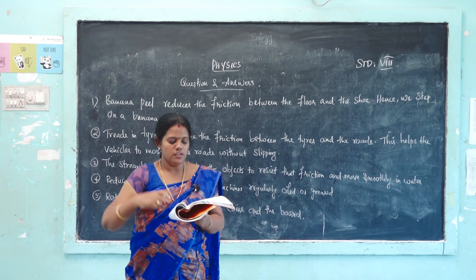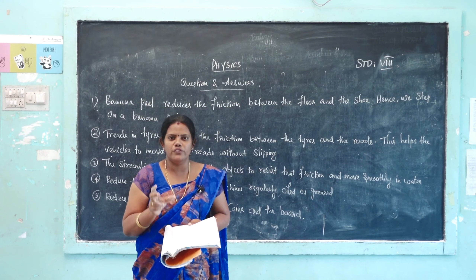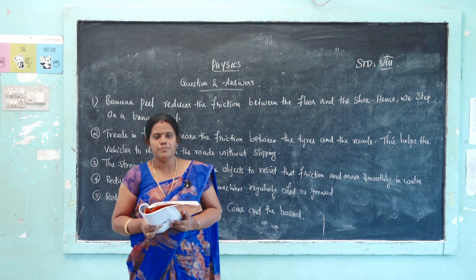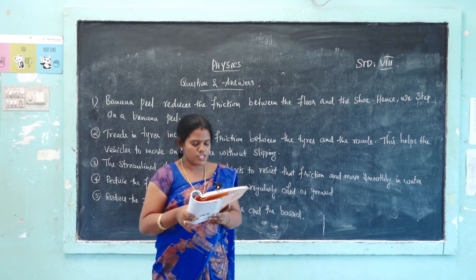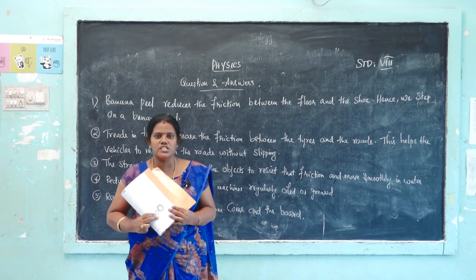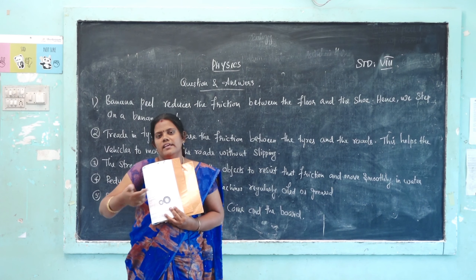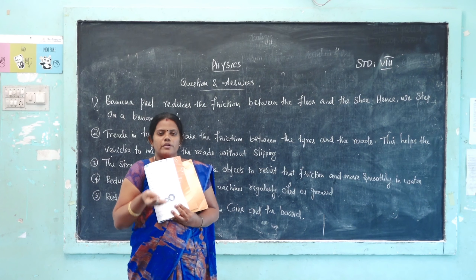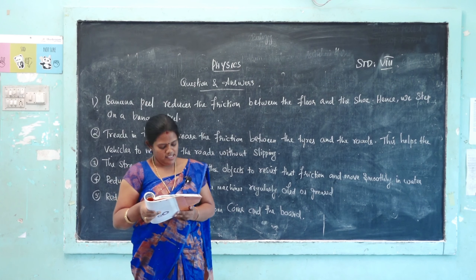Second: smooth surfaces offer more friction than rough surfaces. This is false, because rough surfaces offer more friction than polished surfaces. Third: we are able to walk on the ground because of friction. This is true — without friction, we could not stand or walk properly on the ground.